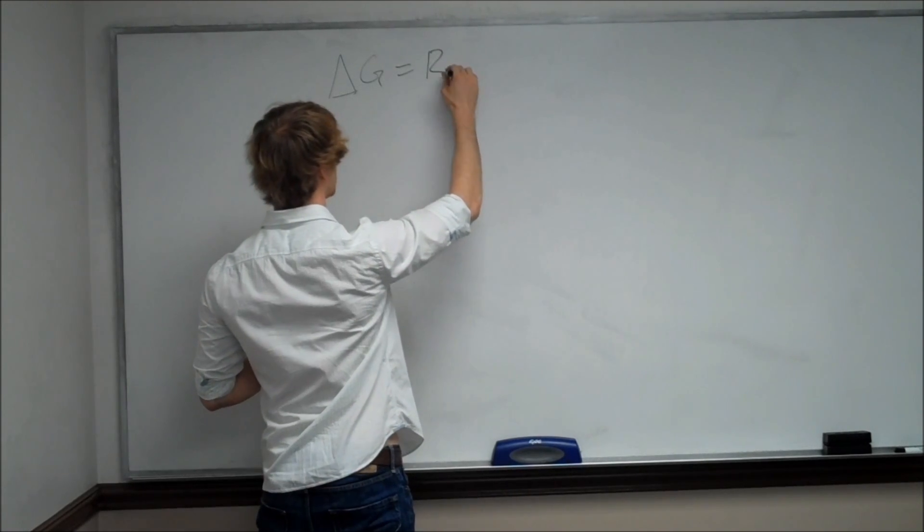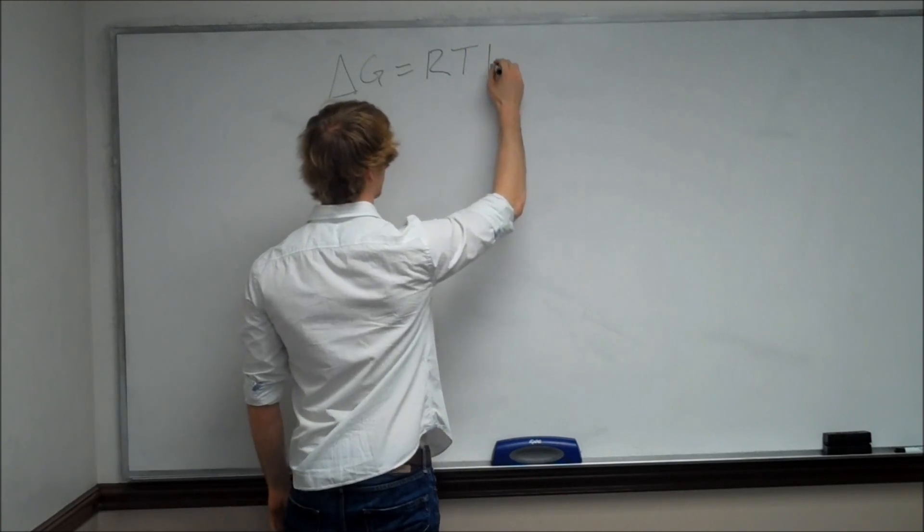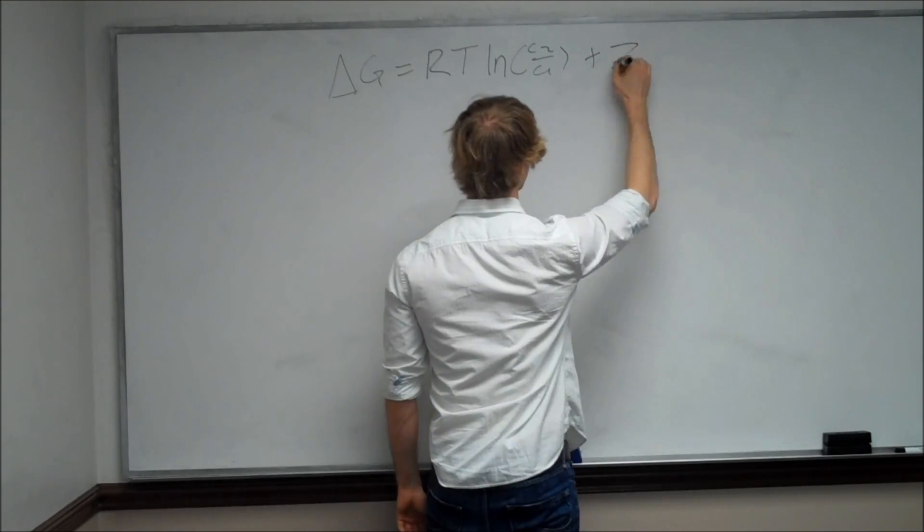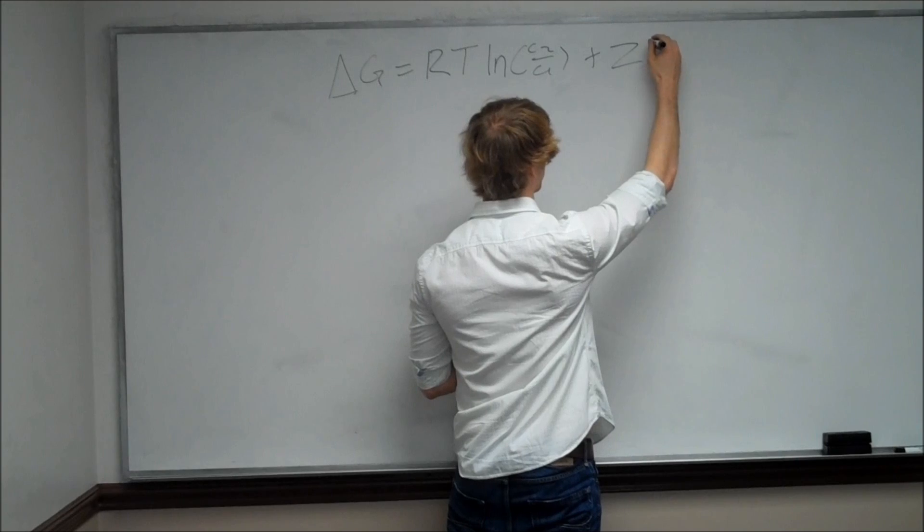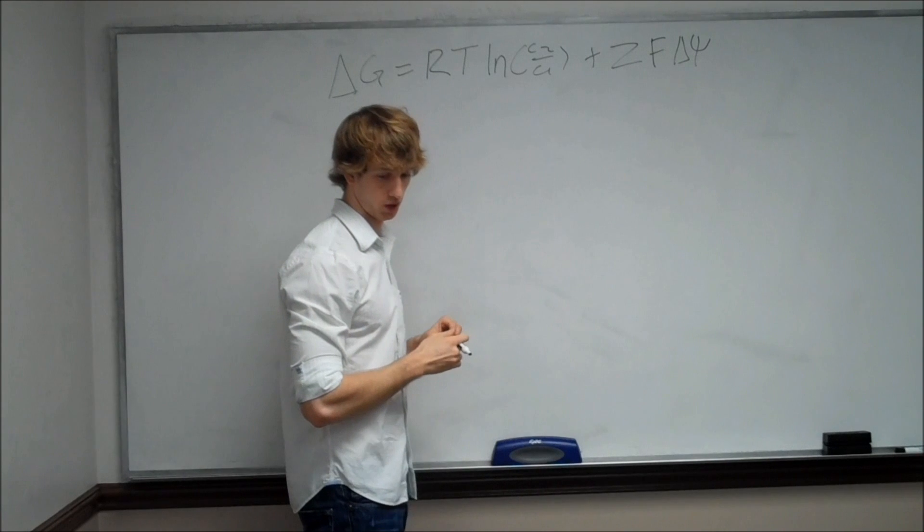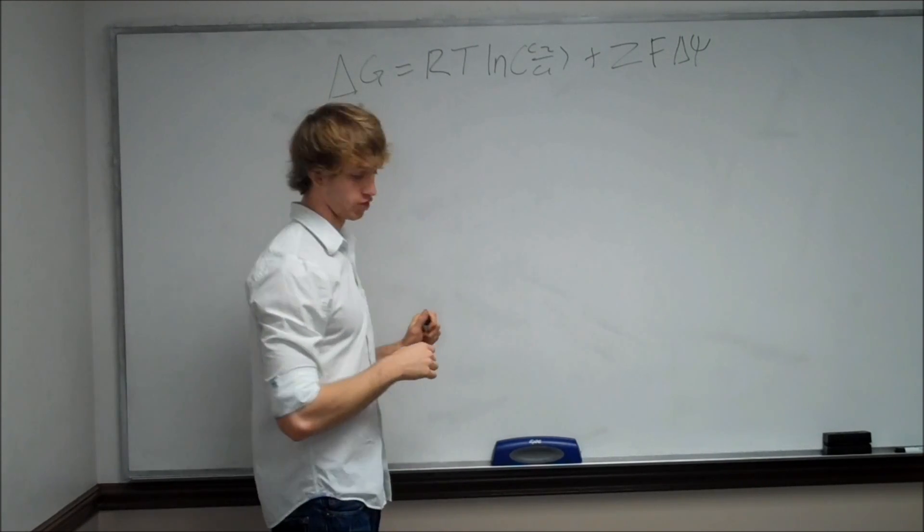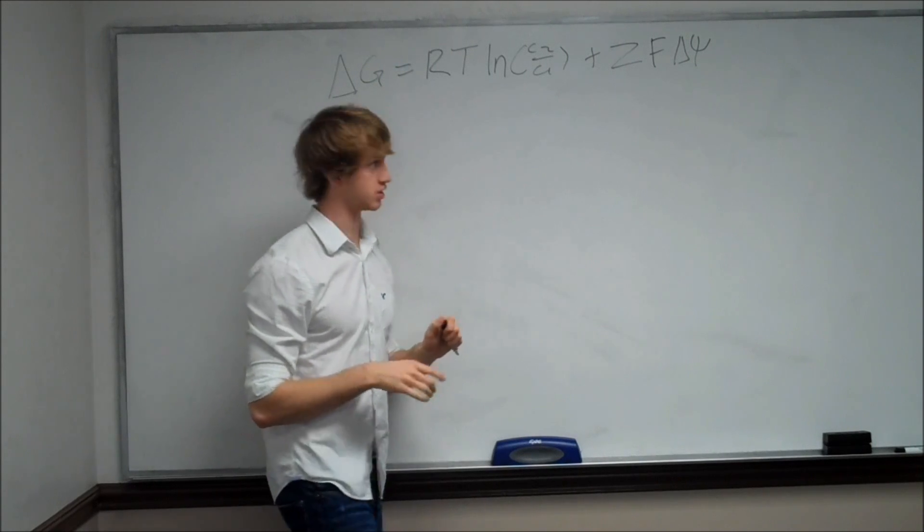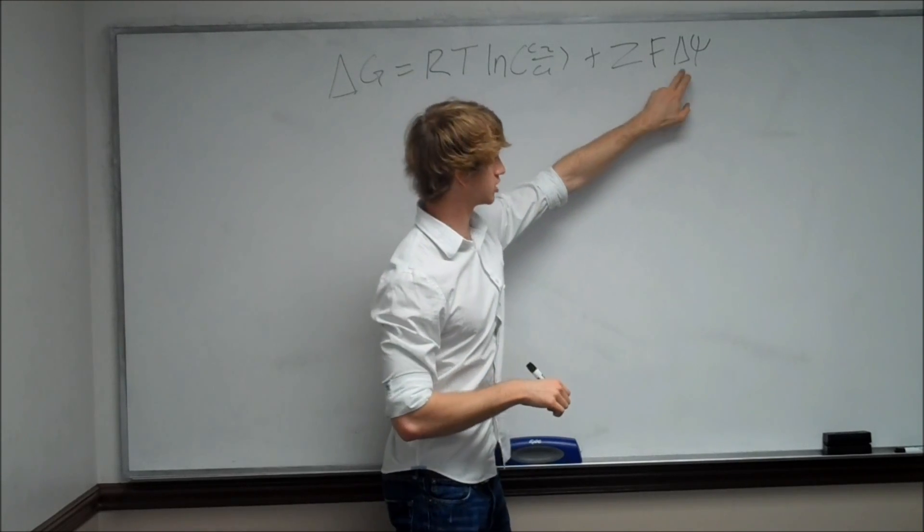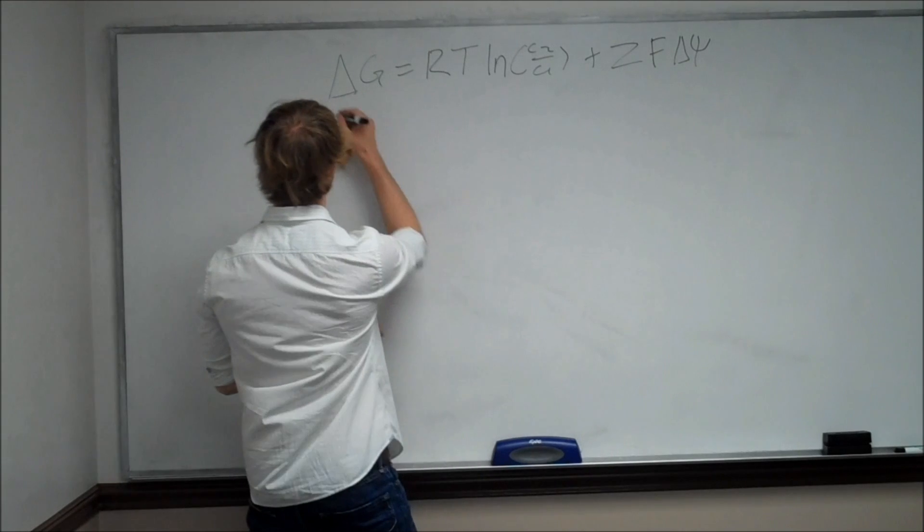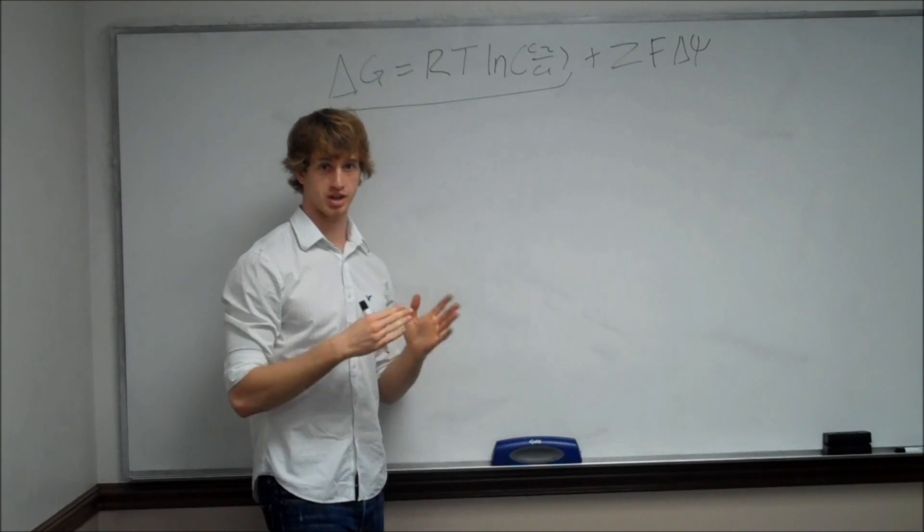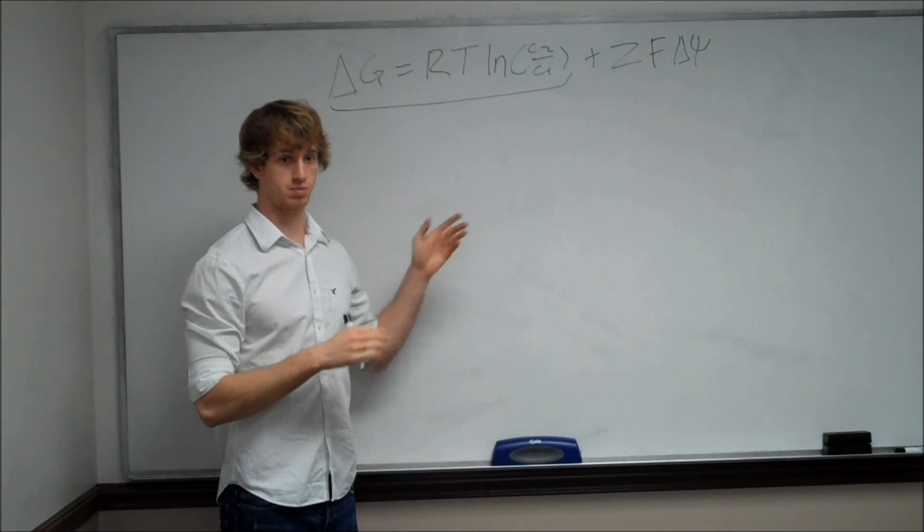Delta G, which is your Gibbs free energy, the energy we need for this reaction to go, is R, the gas constant, multiplied by the temperature times the natural log of K, or C2 over C1, plus the charge of the species that's being transported, multiplied by Faraday's constant, multiplied by the difference in potential across the membrane. For the first part of the question, it's asking us to solve it as if there's no difference in potential across the membrane, which means this value will be zero, so we can ignore this section of the equation.